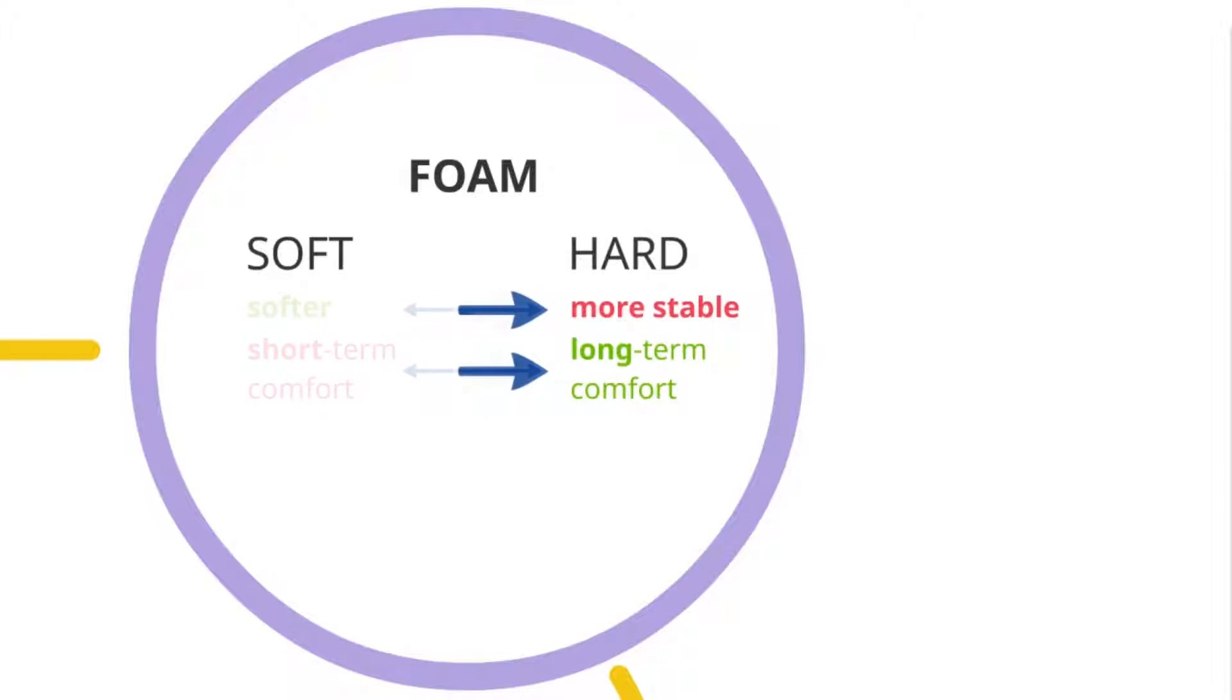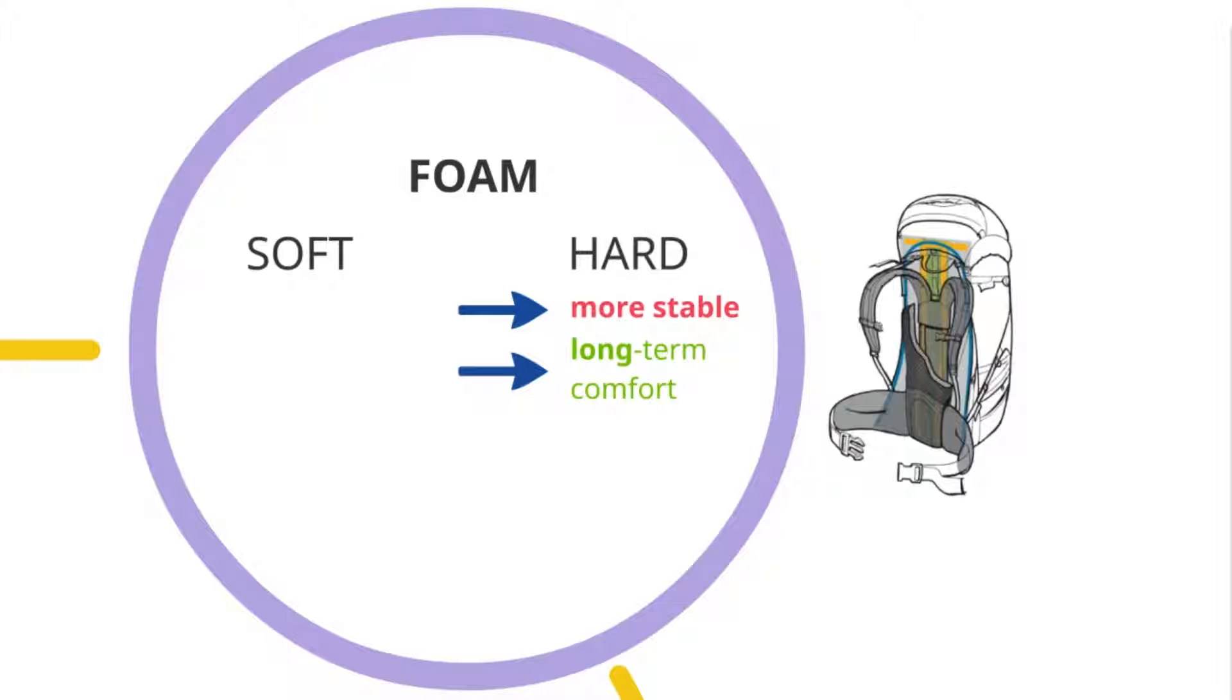That's why we tend to use harder foam in combination with shaping the hip belts and shoulder straps in advance to fit our body forms. Doing this we can ensure comfort.